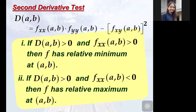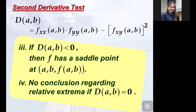After computing the determinant, we verify with these conditions. If the determinant is positive and the second order partial with respect to x at the point AB is also positive, then f has a relative minimum value at AB. If the determinant is positive and the second order partial with respect to x at the point AB is negative, then the function has a relative maximum value at AB. Furthermore, if the determinant is negative, then the function has a saddle point at AB. Lastly, if the determinant is zero, no conclusion could be made regarding the relative extrema.